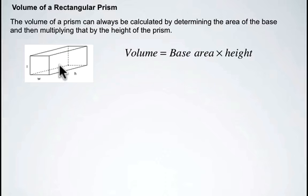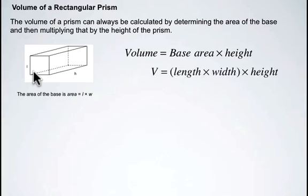To find the volume, we multiply the base area times the height. The area of the base is calculated by length multiplied by width, and the height is just exactly what it says, the height. So the formula is length multiplied by width by height.